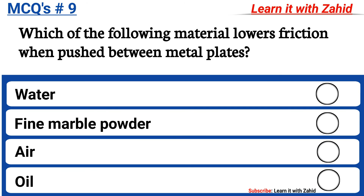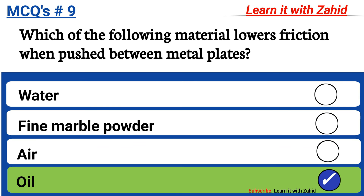Which of the following material lowers friction when pushed between metal plates? Option A water, option B fine marble powder, option C air, option D oil. The correct answer is option D, oil.